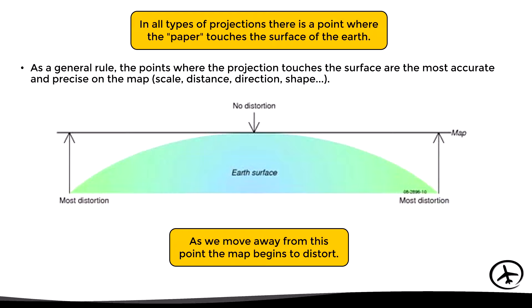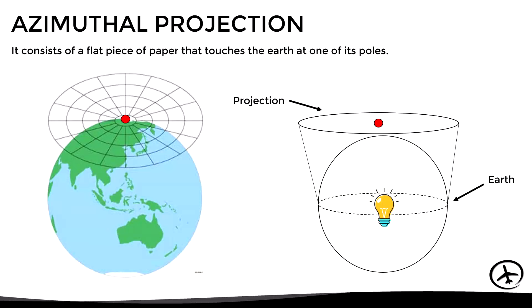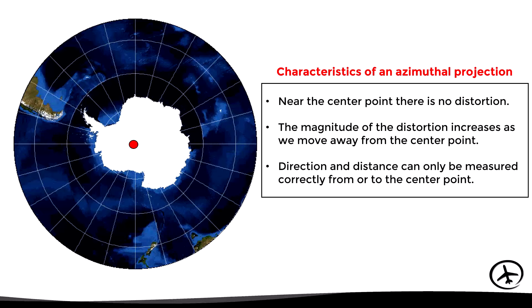Starting with the azimuthal projection: it consists of a flat piece of paper that touches the earth at one of its poles, as seen in these images. The main characteristics are that near the center point there is no distortion, the magnitude of distortion increases as we move away from the center point, and direction and distance can only be measured correctly from the center point. This projection is often used to map the poles but is not commonly used for navigation.